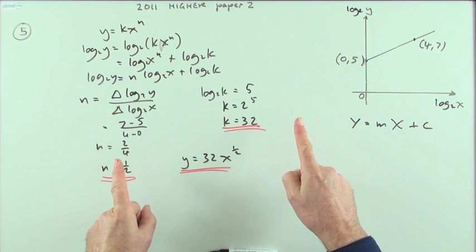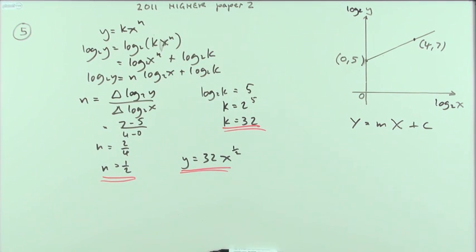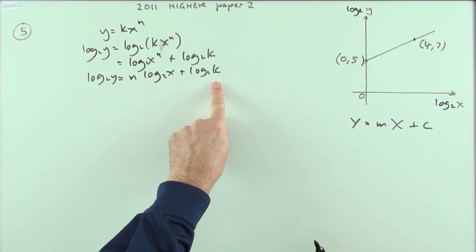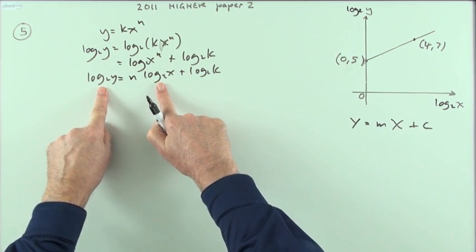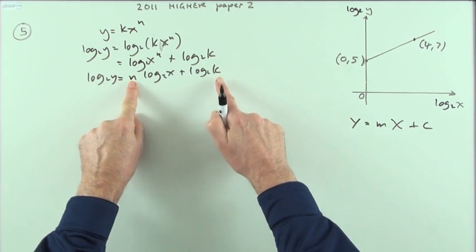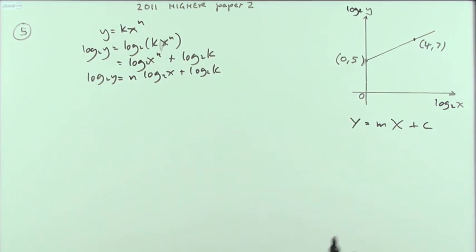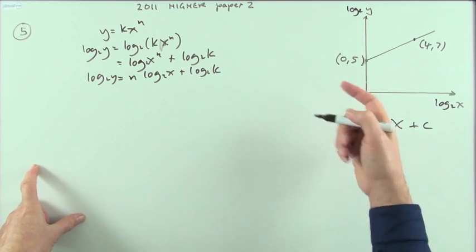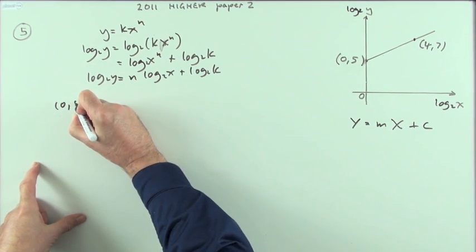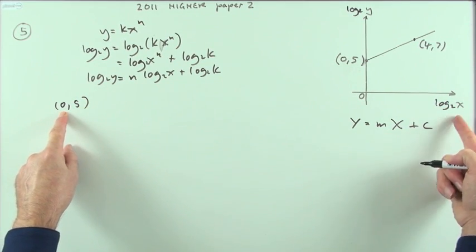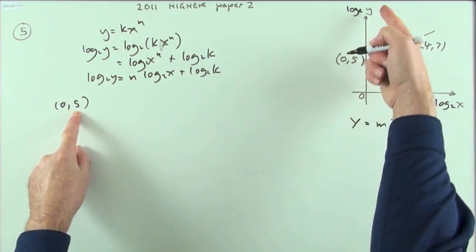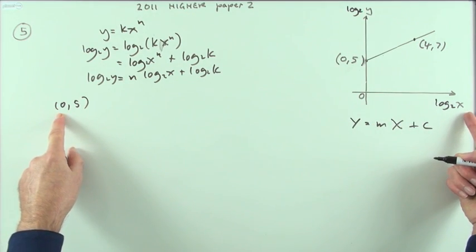Now that's just one way of doing it. You could also do that by simultaneous equations like this. You've got this equation that connects the two logarithms, the log of y and the log of x, and there's pairs of values. So these two logs can be replaced by numbers, leaving just the n and the k as two unknowns, two equations and two unknowns. That should do the trick. So if you put the numbers in, take the first pair, 0, 5. Feeding it into that. Now the 0 is the log 2x and the 5 is the log 2y. The horizontal variable, the vertical variable.